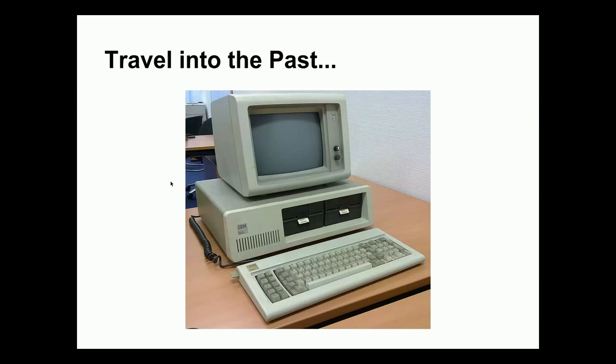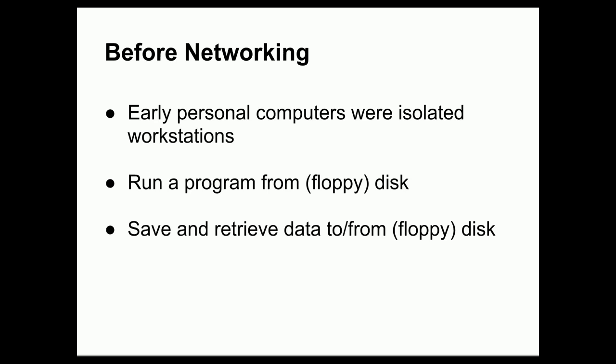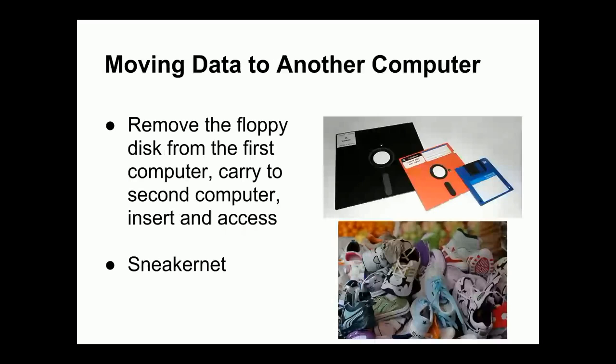These early personal computers were isolated from each other — simply a workstation plugged into a wall outlet for electrical power, with no network communication between systems. To run a program, you would take the floppy disk containing that program, put it in the drive, and run the program off the floppy. Similarly, you would save data to a floppy disk and retrieve it later. To get data from one workstation to another, you would save the data to the disk, remove it from the first computer, carry it to the second computer, insert it, and access the data.